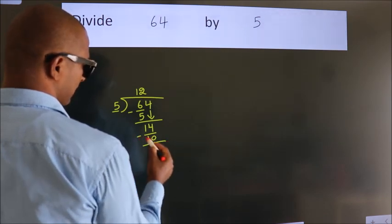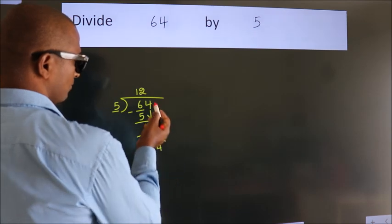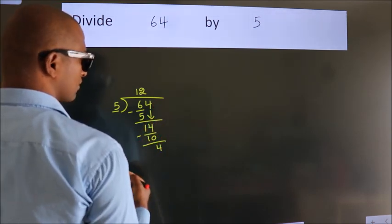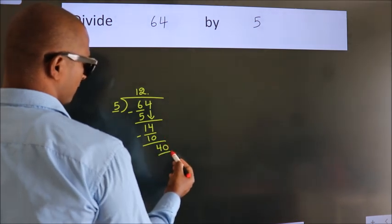Now, we subtract. We get 4. After this, no more numbers to bring it down. So what we do is, we put dot, take 0. So 40.